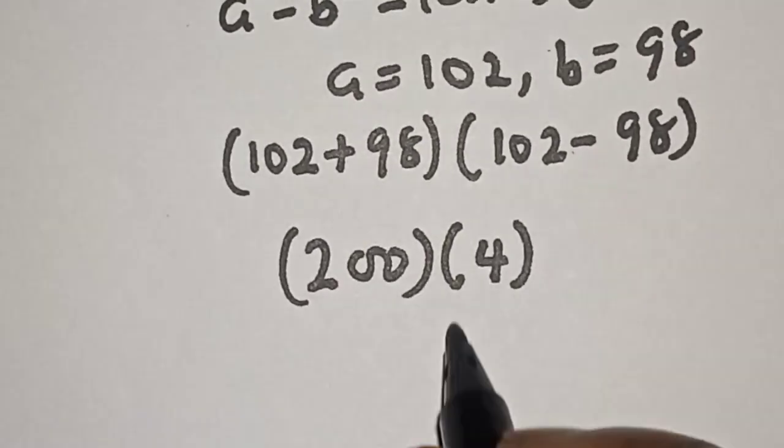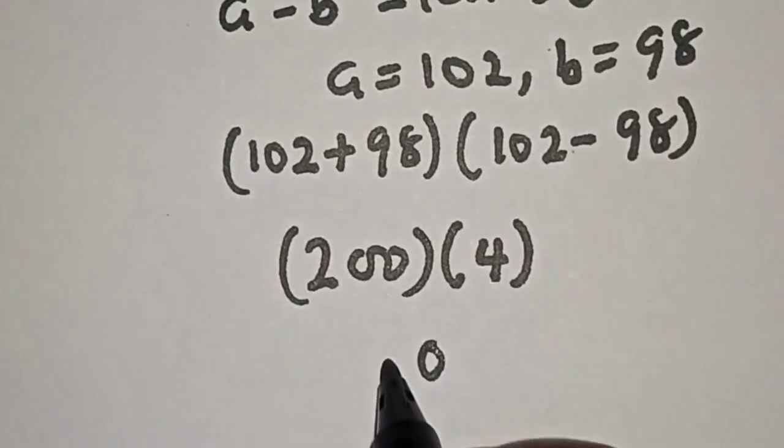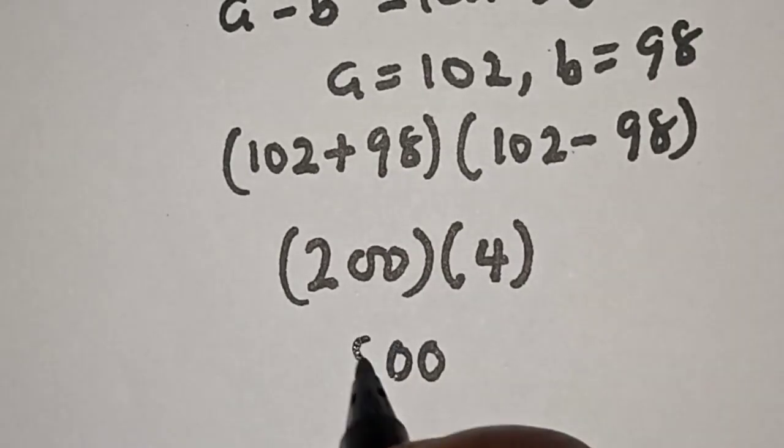Then let's multiply out: 4 times 0 is 0, 4 times 0 is 0, 4 times 2 is 8. So we get 800.